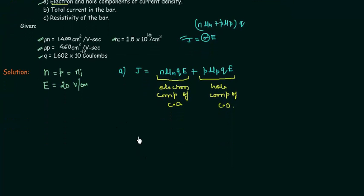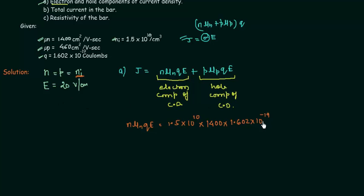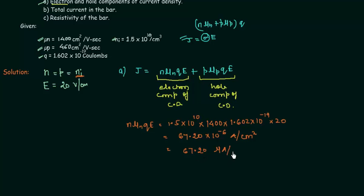The electron component is n·mu_n·q·E. The value for n equals Ni, which is 1.5 x 10 to the power 10. Mu_n is 1400 cm squared per volt-second. q is 1.602 x 10 to the power minus 19 coulombs, and E is 20 volts per cm. Solving this gives the electron component equal to 67.20 micro ampere per centimeter square.